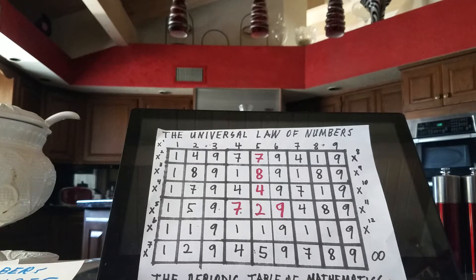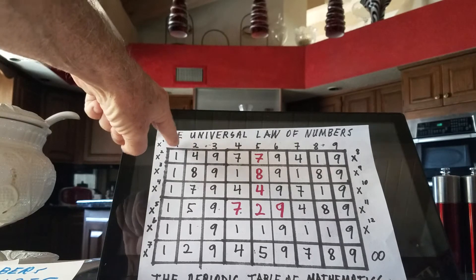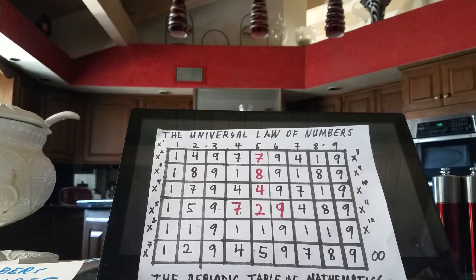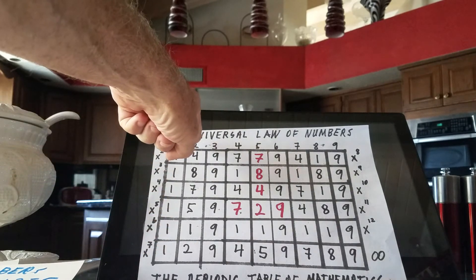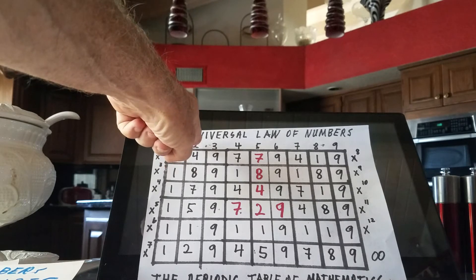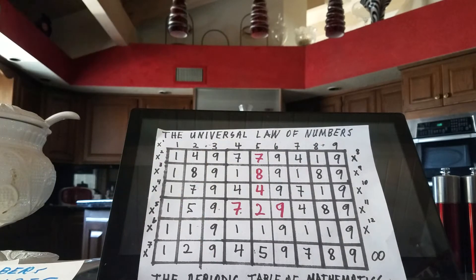Zero is not a member of the universal law of numbers because by its very definition it's something that doesn't exist. But we all recognize it, and I do too. If I multiply 10 by 10 it's going to be 100, but it's going to be a 1 number. If I multiply 10 by 2 it will be 20, but it will be a 2 number, and it will abide by the laws of the universal law of numbers.